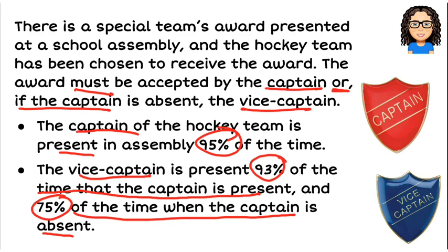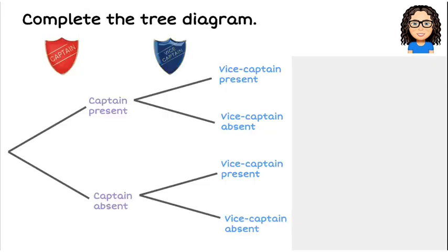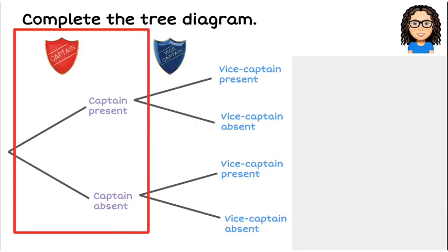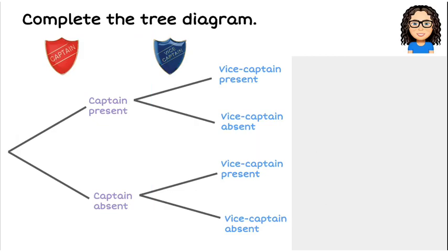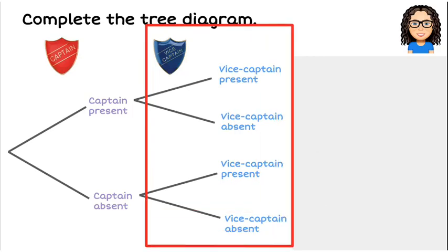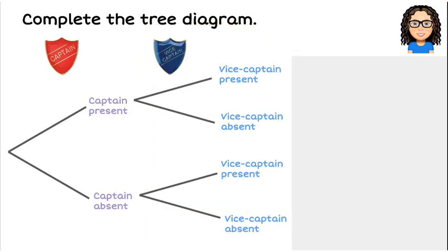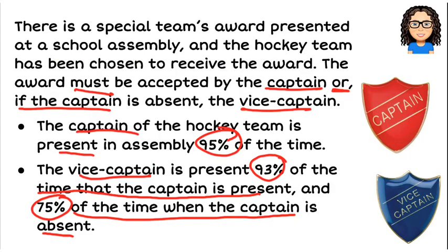Those will be the two layers that we have in our tree diagram. The first layer is about whether the captain is present or not, and the second layer is whether the vice captain is present or not. So we want to now put the information onto our tree.